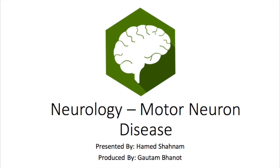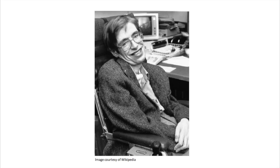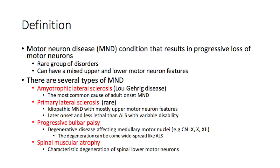My name is Hamid and in today's discussion we'll be covering motor neuron disease. A famous example of motor neuron disease is the diagnosis of Stephen Hawking with ALS, and remarkably he was diagnosed at the age of 21 and is still alive with the condition.